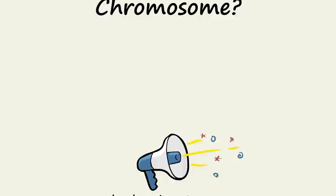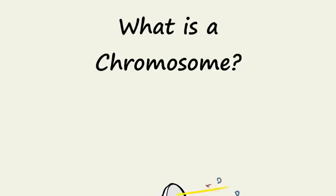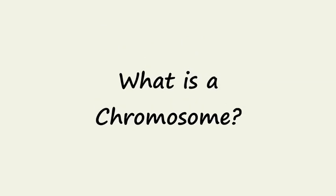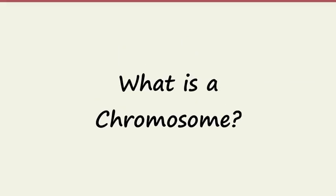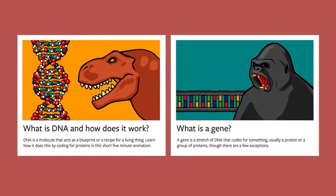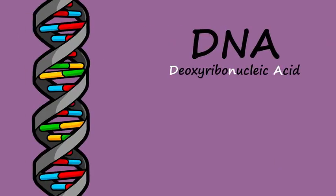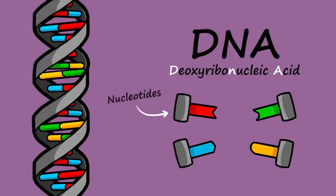Stated Clearly presents: What is a chromosome? In previous animations, we learned that DNA is a spiraling chain-like molecule made up of four different types of nucleotides. Scientists have labeled them A, C, T, and G.